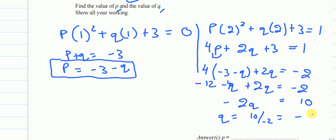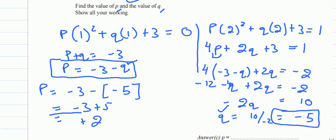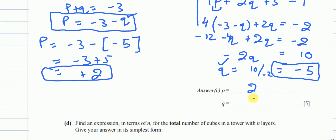Now that we have q = −5, we substitute back: p = −3 − (−5) = −3 + 5 = 2. So p = 2 and q = −5. The expression for white cubes is 2n² − 5n + 3.